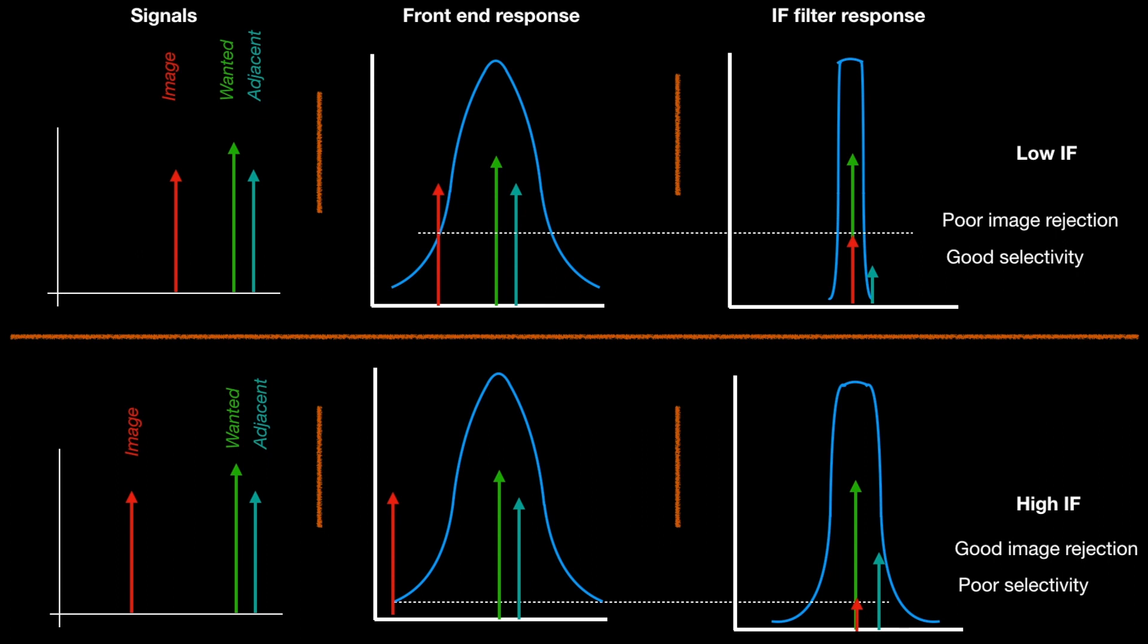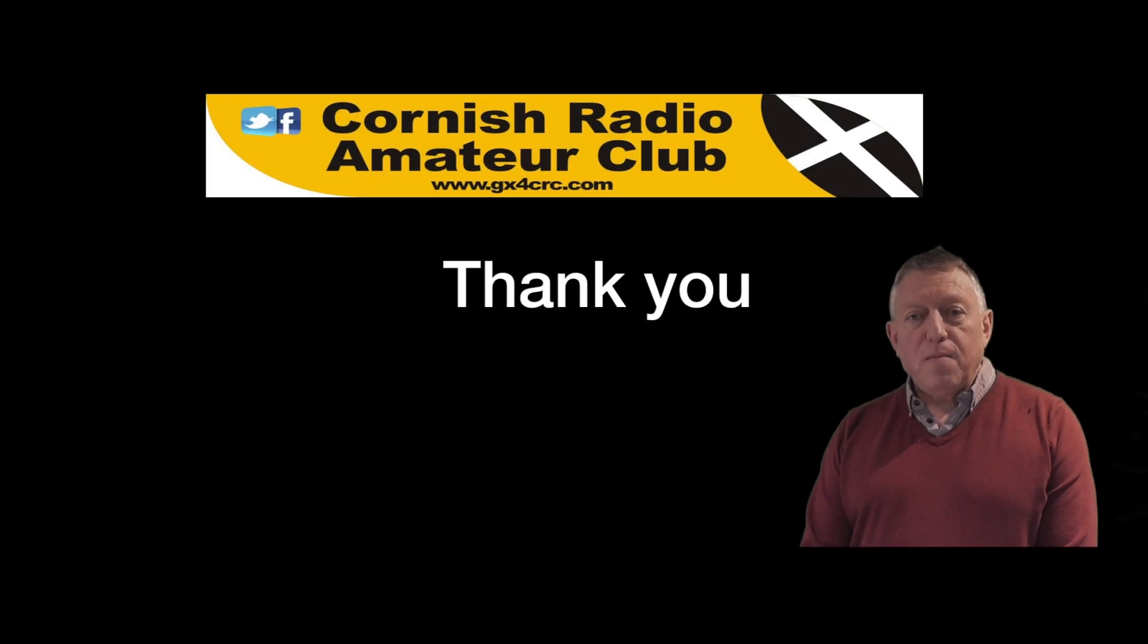I think that just about sums up the superhet receiver and what you need to know about it for the RSGB advanced exam. Please look at this video in conjunction with the book. The examples have been taken from the book, and I hope this makes it a bit clearer. In the next video, we'll continue to look at the double superhet, which can give advantages of both low IF and high IF, and we'll go on to look at some of the circuitry contained within the block diagrams in a bit more detail. Thank you very much once again, and I look forward to presenting to you in Receivers C.